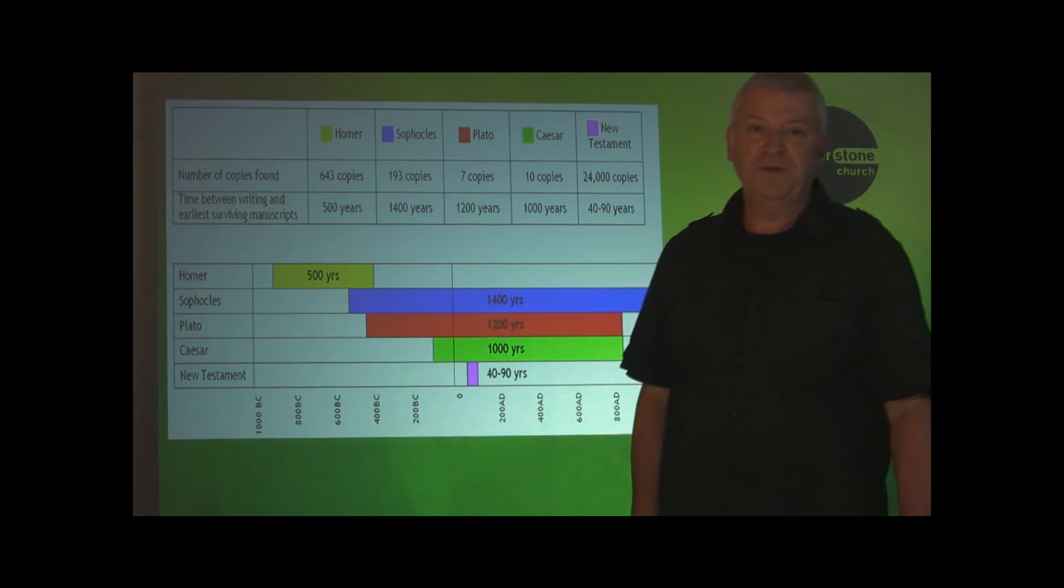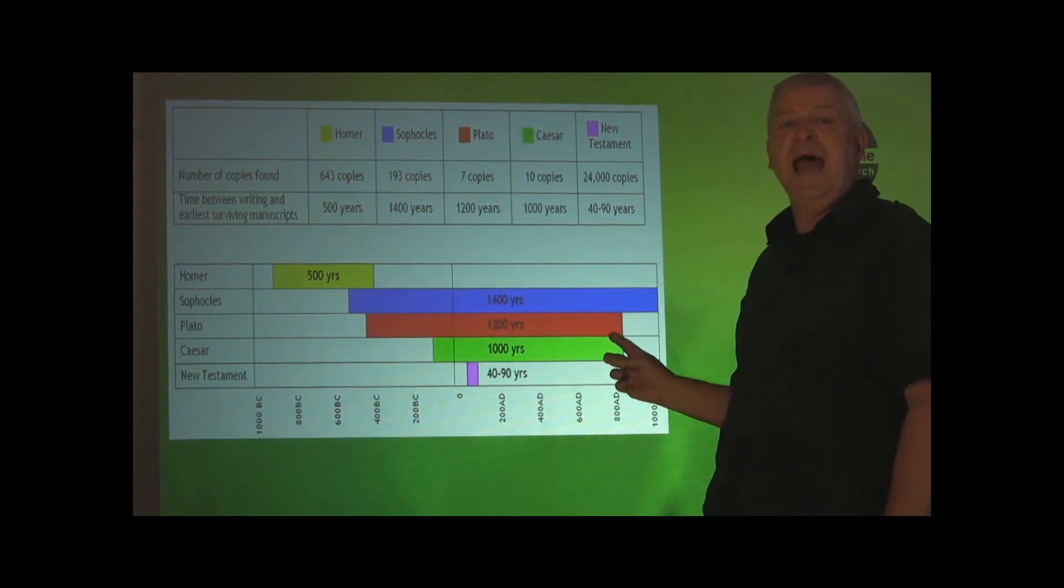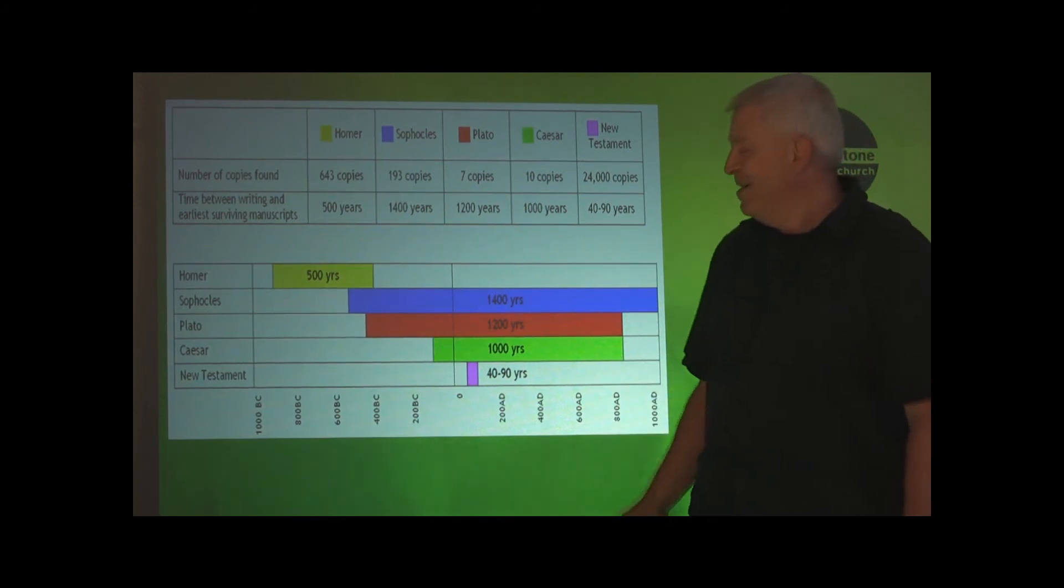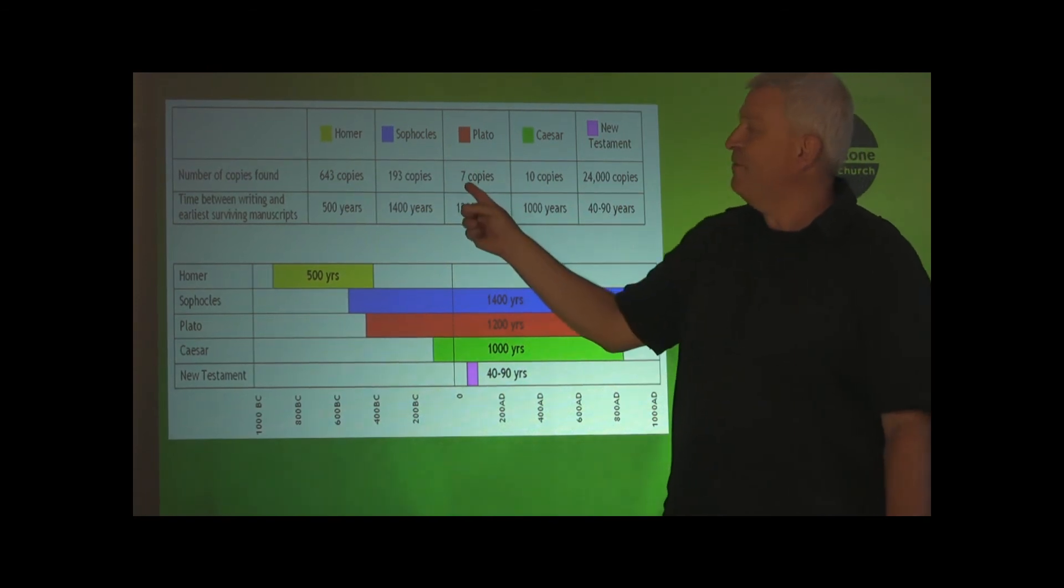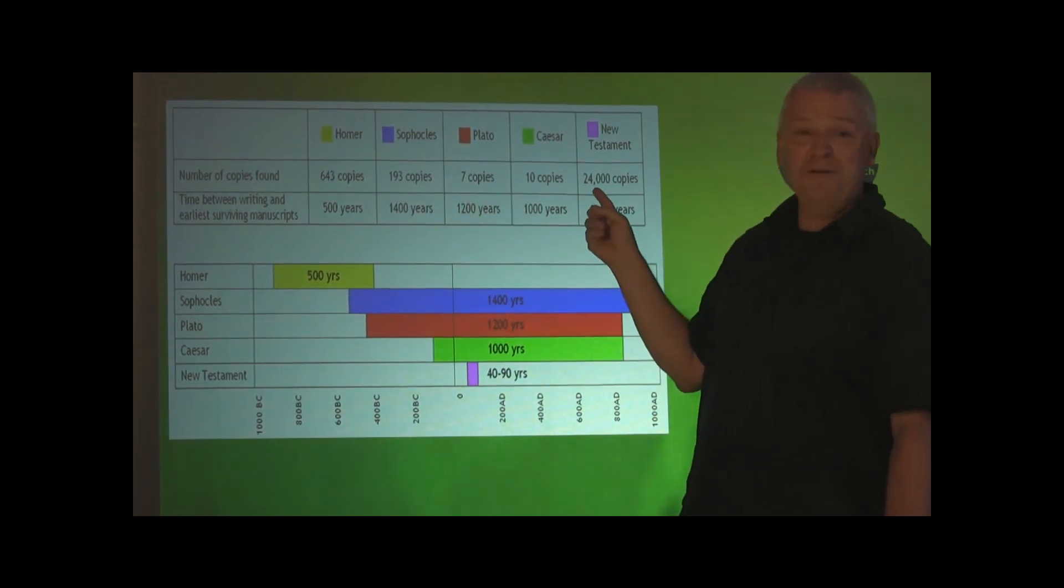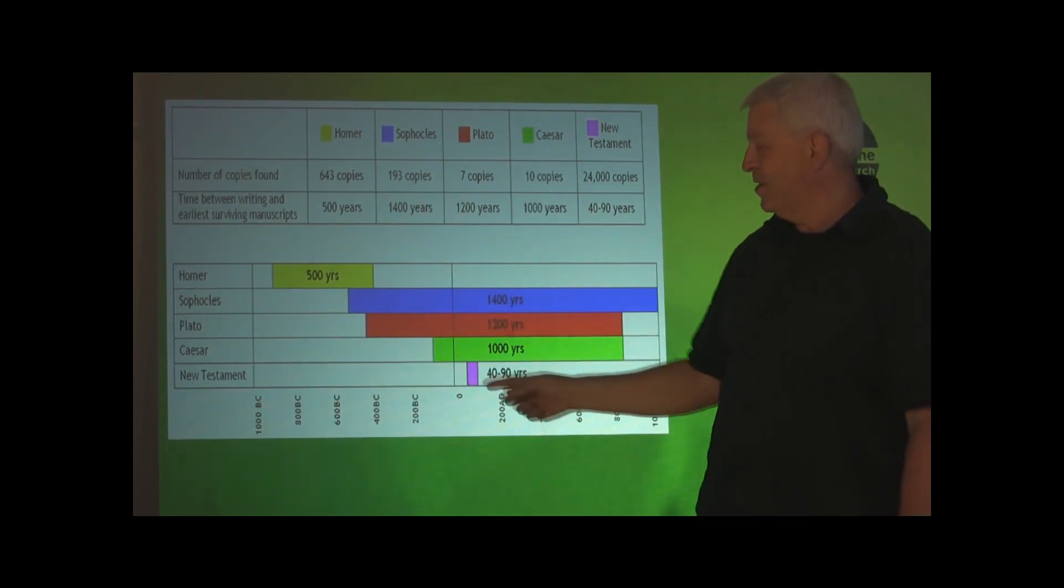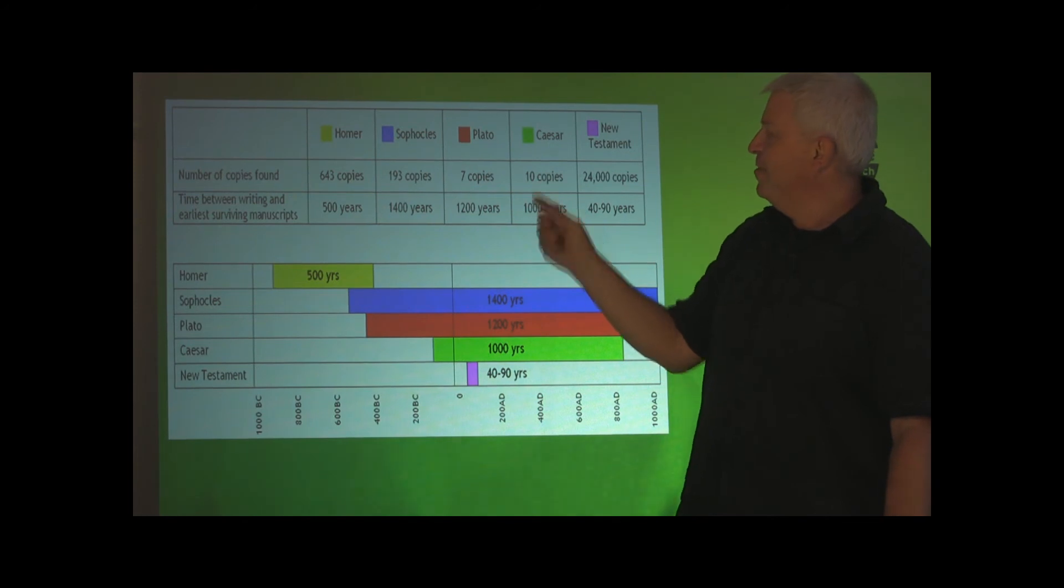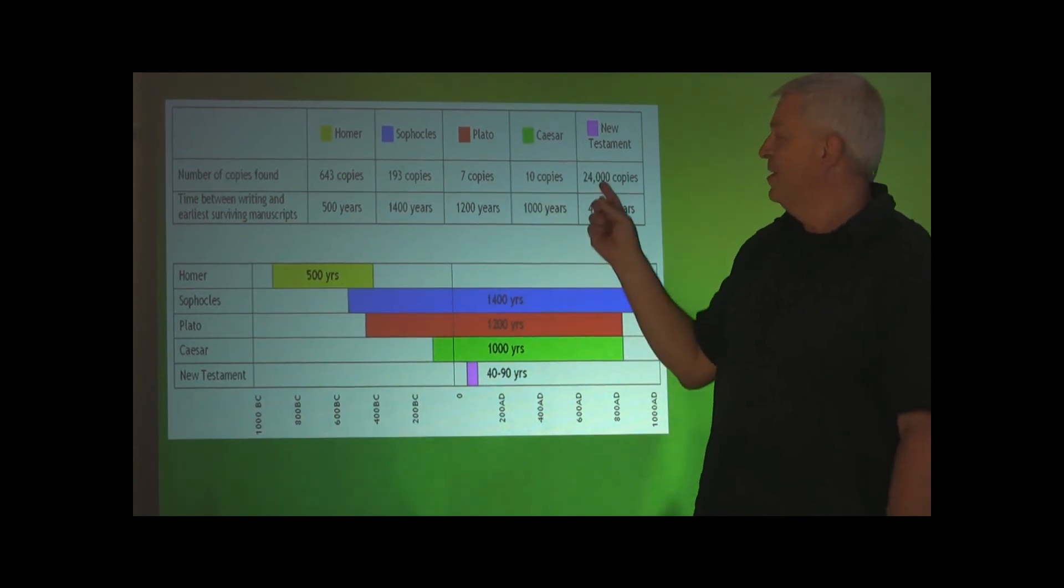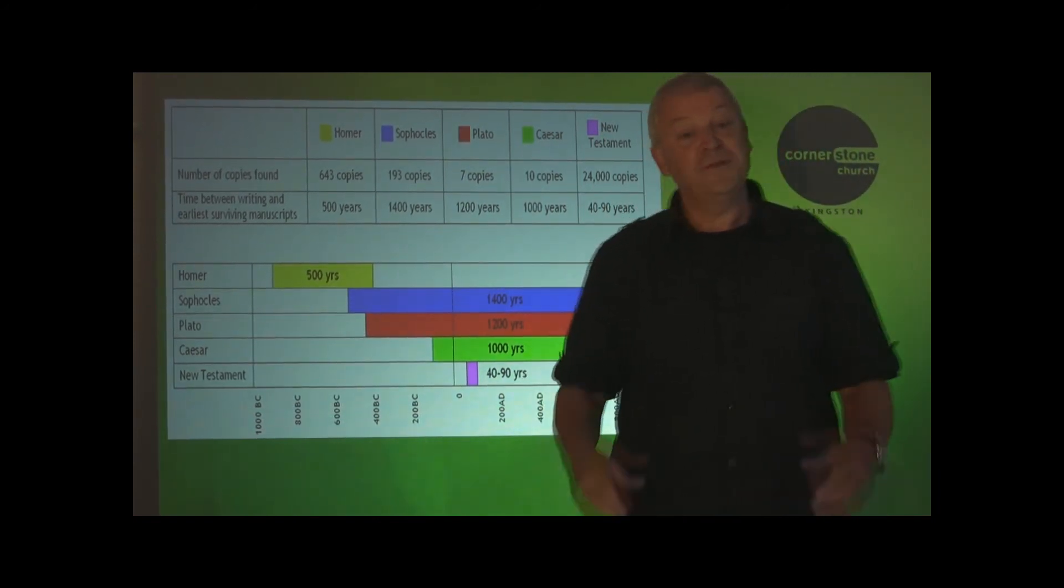Look at Plato, famous philosopher. There's a 1,200-year gap between when he wrote and the earliest copies we have. We only have seven copies of Plato. 24,000 copies of the New Testament. Caesar: 1,000 years between when Caesar wrote his own history to the earliest copies. We only have 10 copies of Caesar's Gallic Wars, 1,000 years difference. 24,000 copies in the New Testament, 40 to 90 years difference. Do you see it?